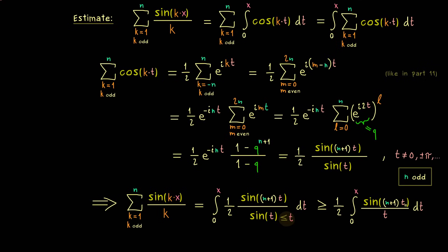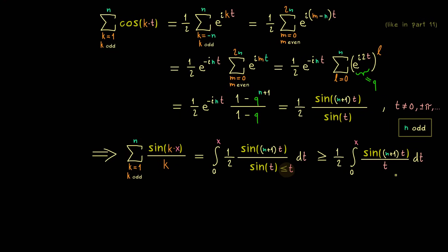In other words, we just have the sine function in the numerator divided by t. So this is what we have, and to make it even clearer we should substitute inside the sine function. So let's say n plus 1 times t is what we call y. Then clearly we get an integral from 0 to n plus 1 times x. And inside we just have the sine function of y divided by y.